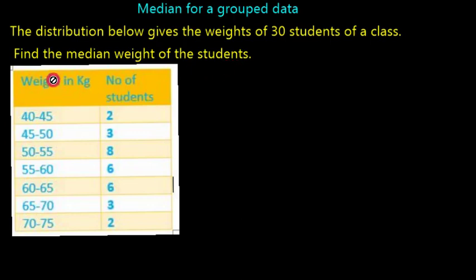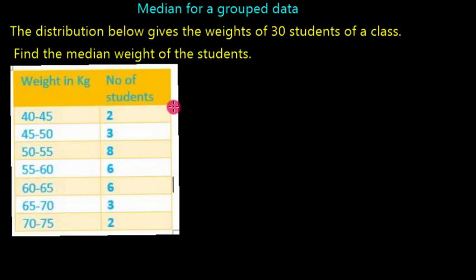The first column represents the weight in kg and the second column represents the number of students. We consider weight in kg as the class intervals in a frequency distribution table, and the number of students is taken as the frequency.